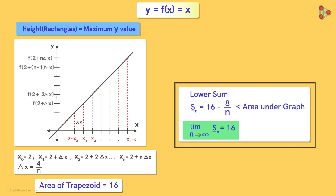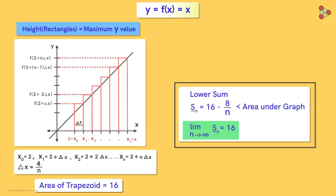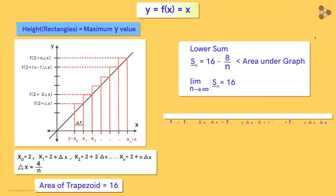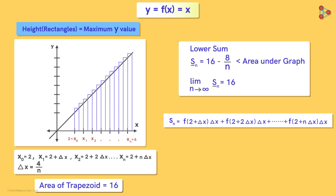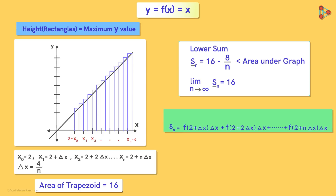Notice that in each sub-interval, the value of y corresponding to the right end value of x will be the maximum y value. Taking these as the heights of the rectangles, we get the sum of their areas. Notice that this sum of areas is greater than the area under the graph — even if we increase the number of sub-intervals, this sum will always be greater. So this sum is called the upper sum, denoted by putting a bar above the symbol.